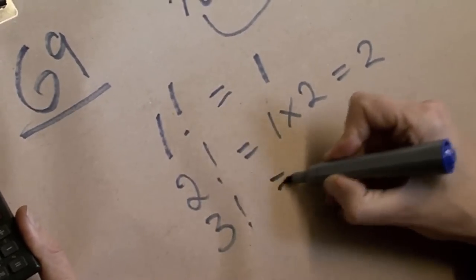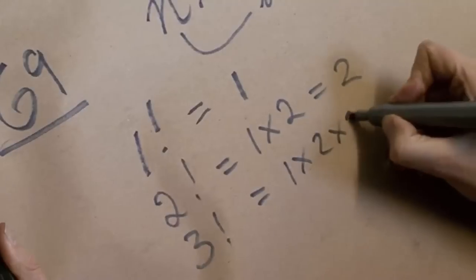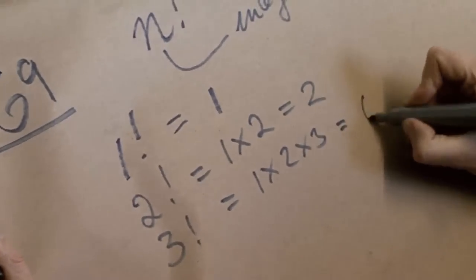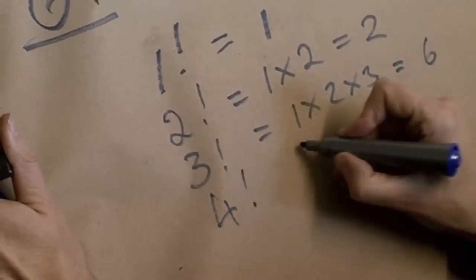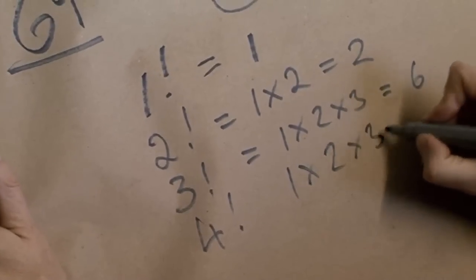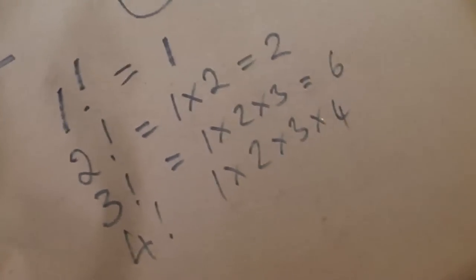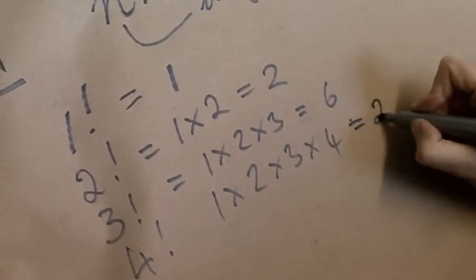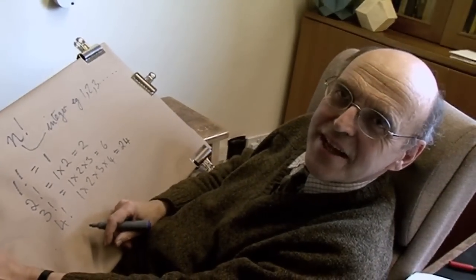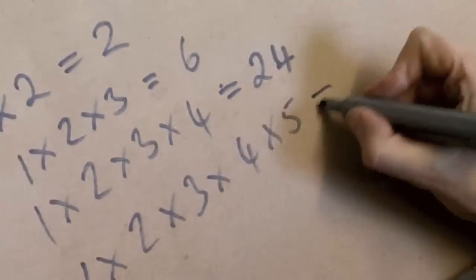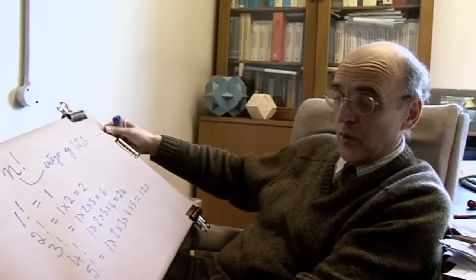And factorial 3 is equal to 1 times 2 times 3, which is equal to 6. And factorial 4 is 1 times 2 times 3 times 4, which is equal to 24. Now if we go to factorial 5, that's about as far as I can go without having to write things down. That's equal to 120. These numbers increase quite quickly.